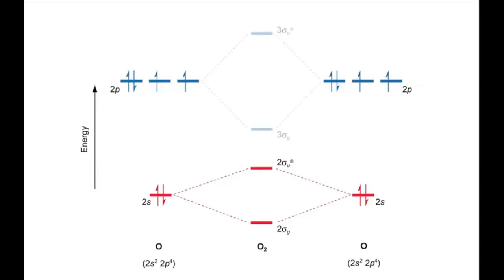The 2p orbitals interact in a similar way. This gives a sigma g bonding orbital that's stabilized with respect to the atomic orbitals and the sigma u antibonding orbital that is destabilized.